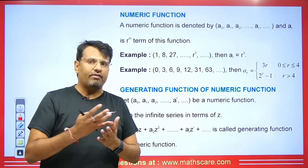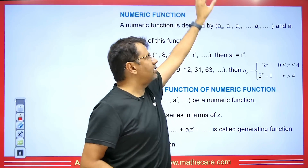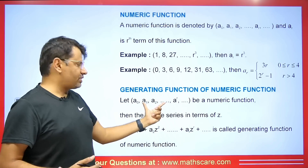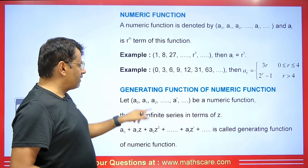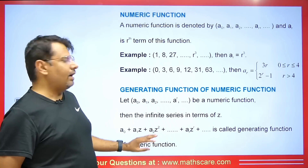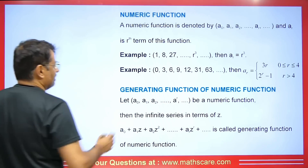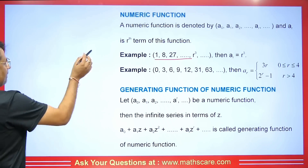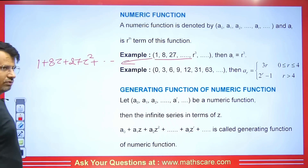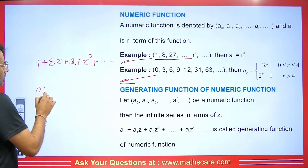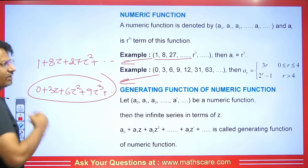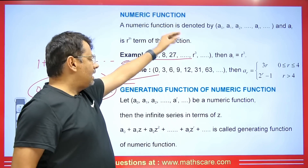Now we will discuss the generating function of a numeric function. The generating function is defined over the numeric function. For any numeric function given, you multiply each term by Z raised to its index: the first term stays constant, multiply the second by Z, the third by Z square, the fourth by Z cube, and so on. The series formed is the generating function. For example, for 1, 8, 27, ..., the generating function is 1 + 8Z + 27Z² + ...